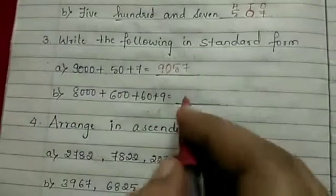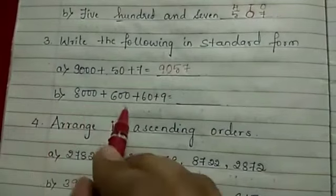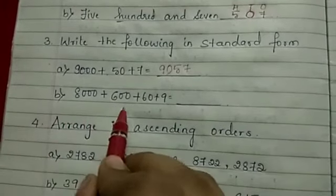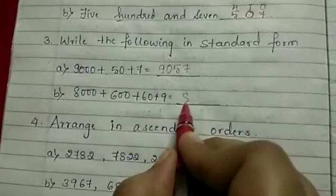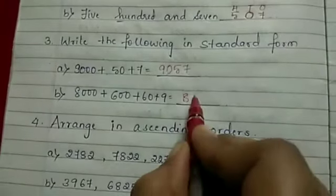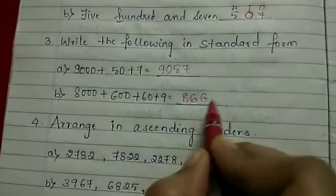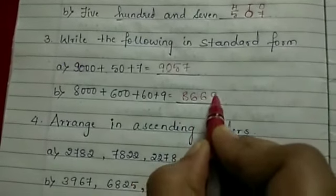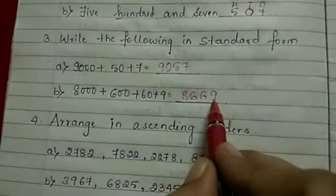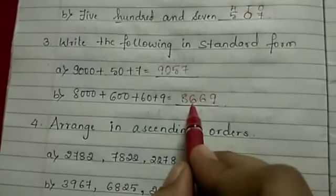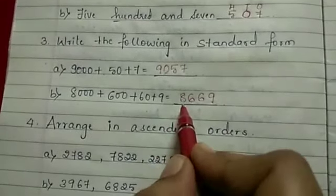Next: 8000 + 660 + 9 — that is 8,669. Here we have all place values: 1's, 10's, 100's, and 1000's — all filled.